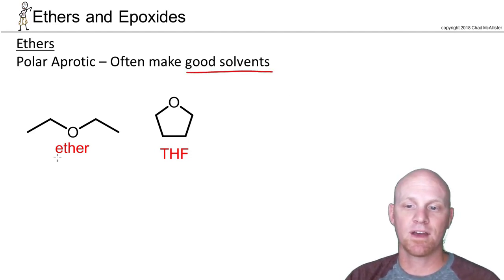And here are a couple common examples. Ether or diethyl ether, and then tetrahydrofuran here, THF. We saw these both as solvents in the Grignard reactions, but they're solvents for a wide variety of organic reactions because they can dissolve a wide variety of organic compounds.